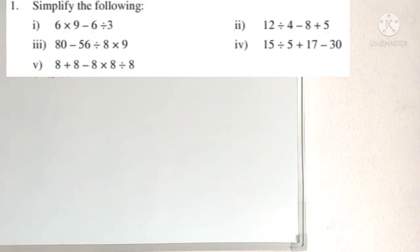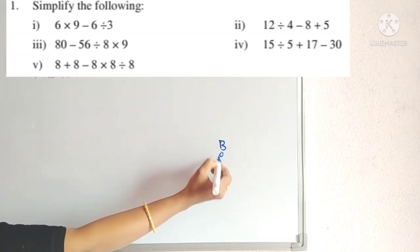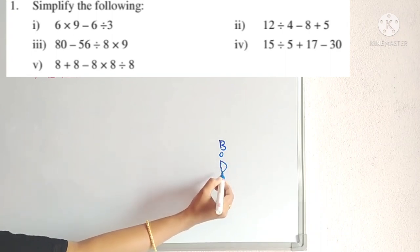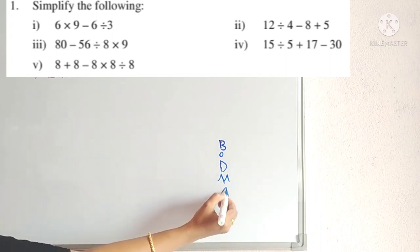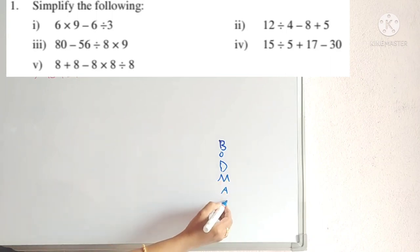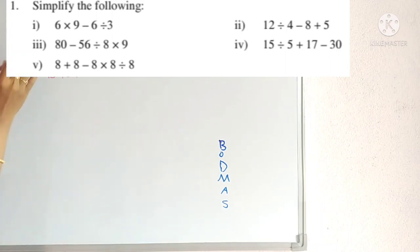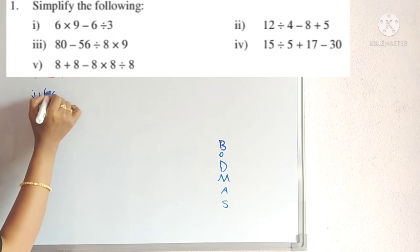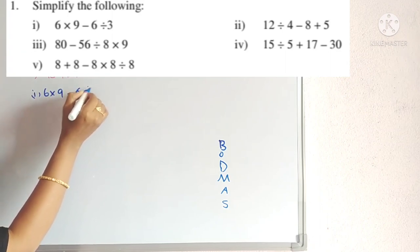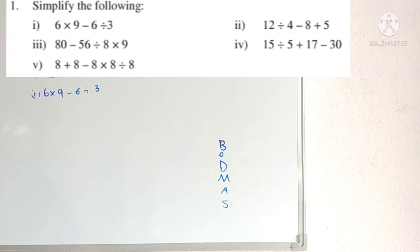Now we will see Exercise 1.4. The first problem says: simplify the following — total 5 problems. We simplify by using BODMAS rule: B for Bracket, O for Of, D for Division, M for Multiplication, A for Addition, S for Subtraction. First one: 6 × 9 − 6 ÷ 3.